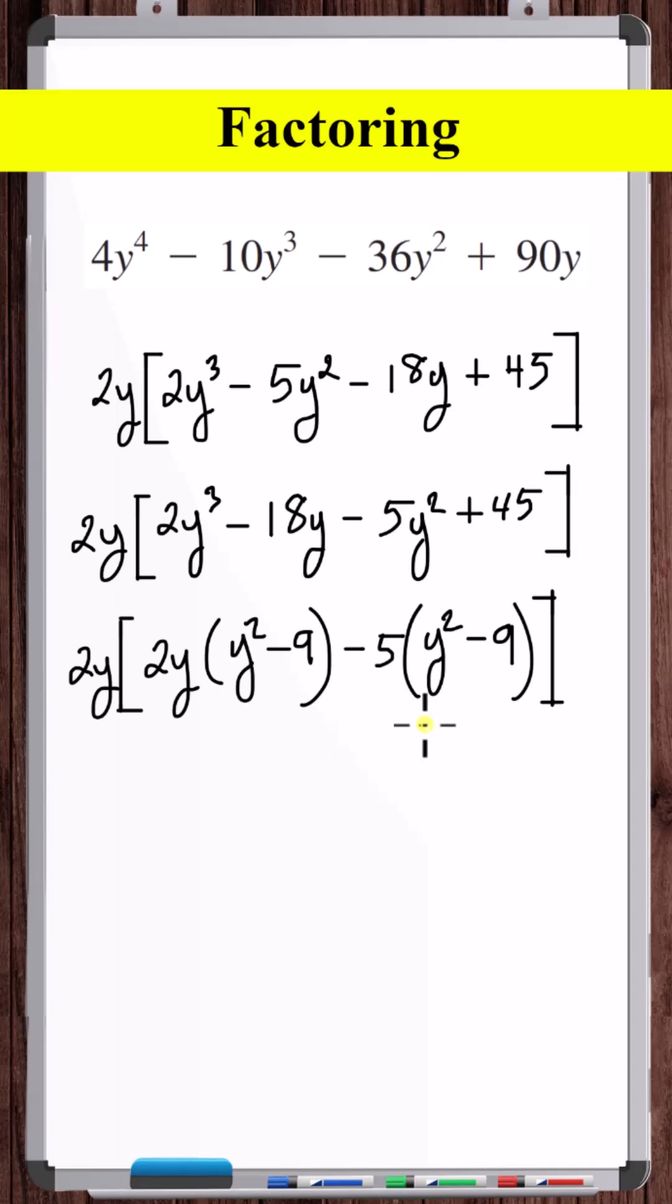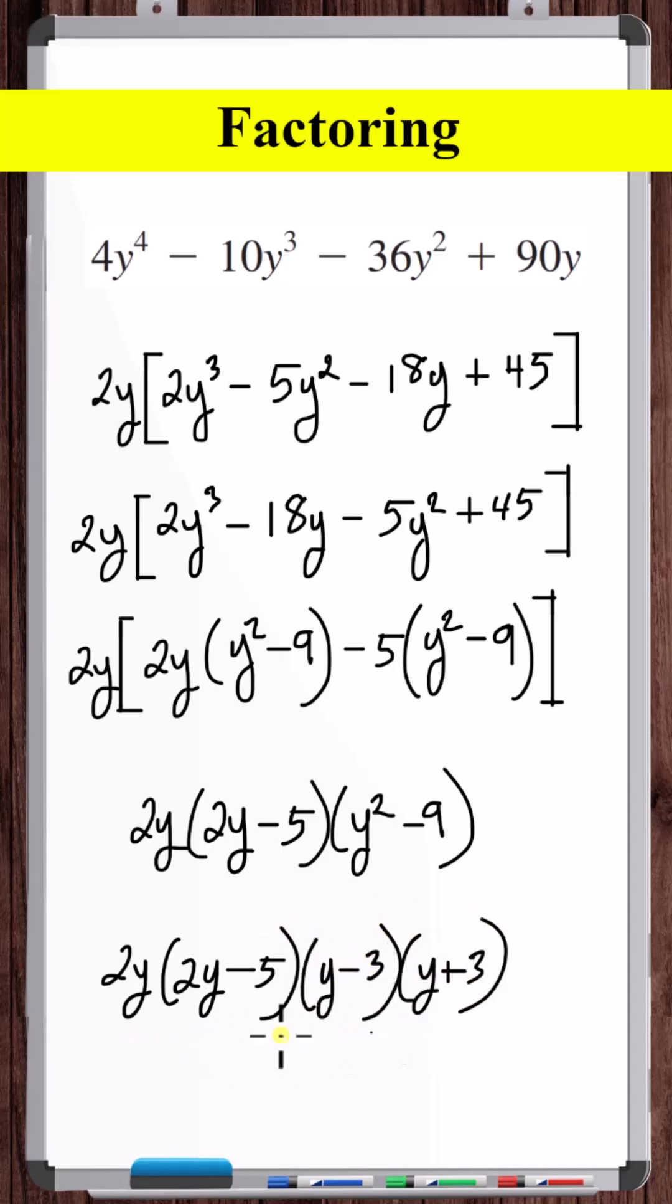Now let's factor out this y squared minus 9. Now we can factor this difference of two squares to y minus 3 times y plus 3. And that's fully factored.